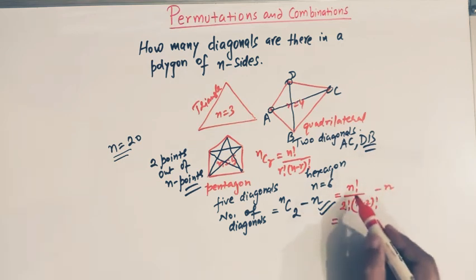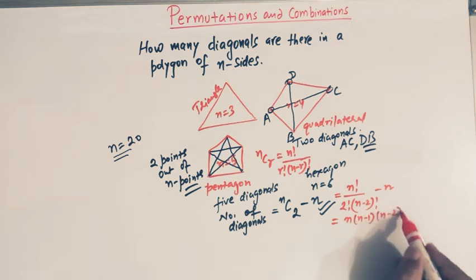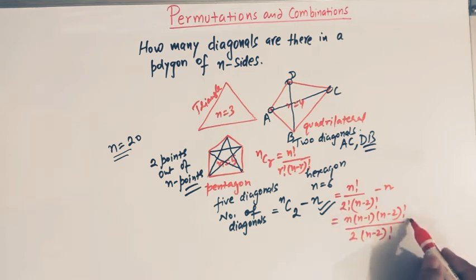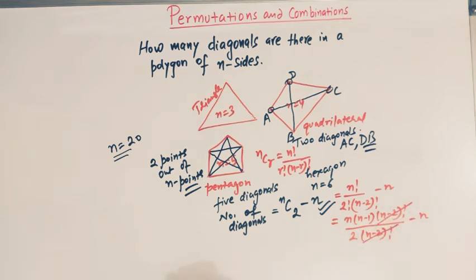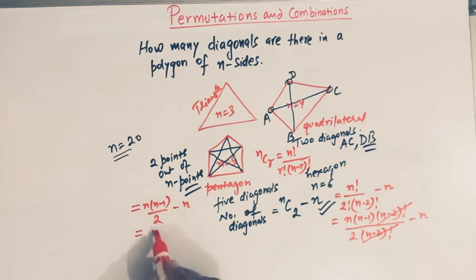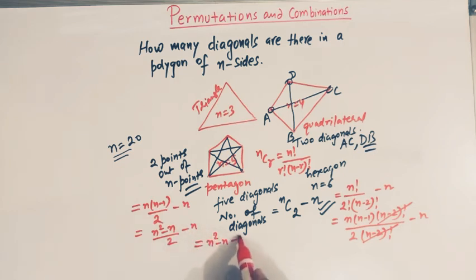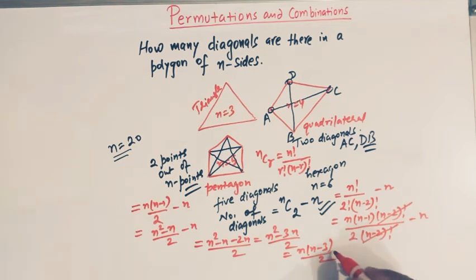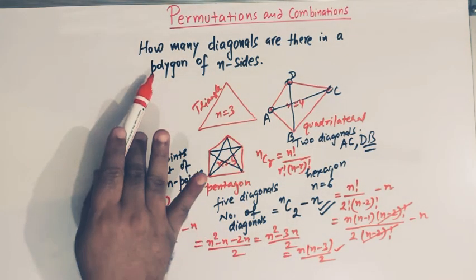We can write n factorial as n(n−1)(n−2)! divided by 2 times (n−2)!. The (n−2)! terms cancel, leaving n(n−1) divided by 2, minus n. This equals (n²−n)/2 − n, which is (n²−n−2n)/2, giving us (n²−3n)/2, or n(n−3)/2.